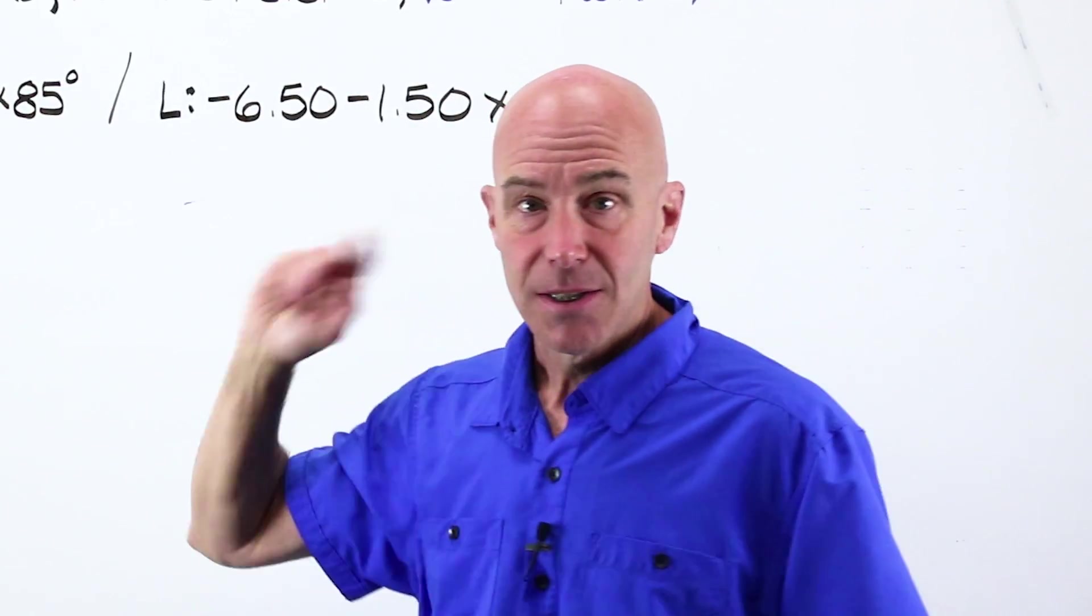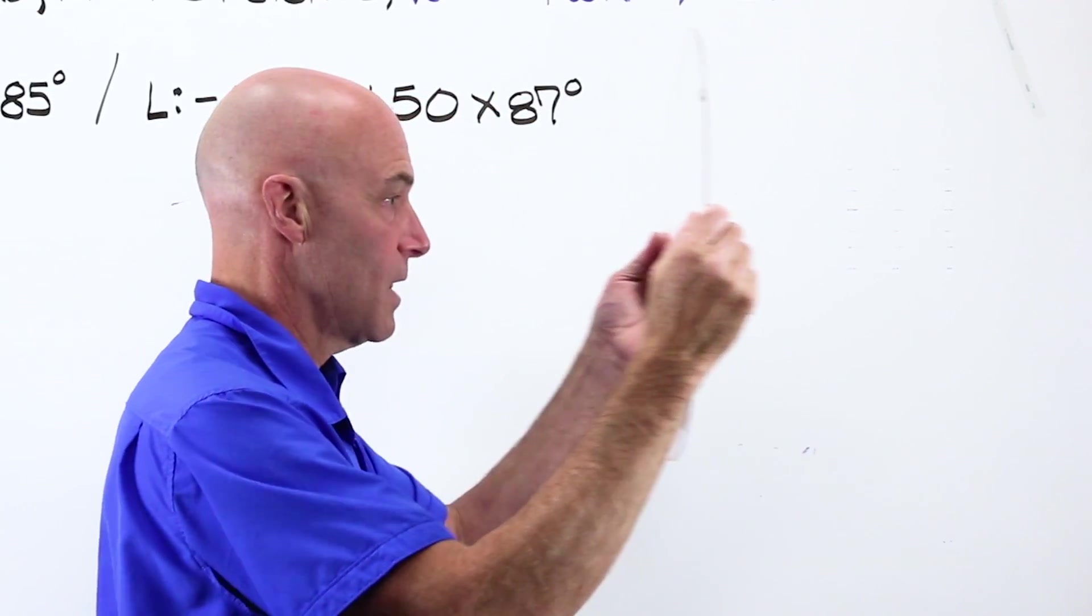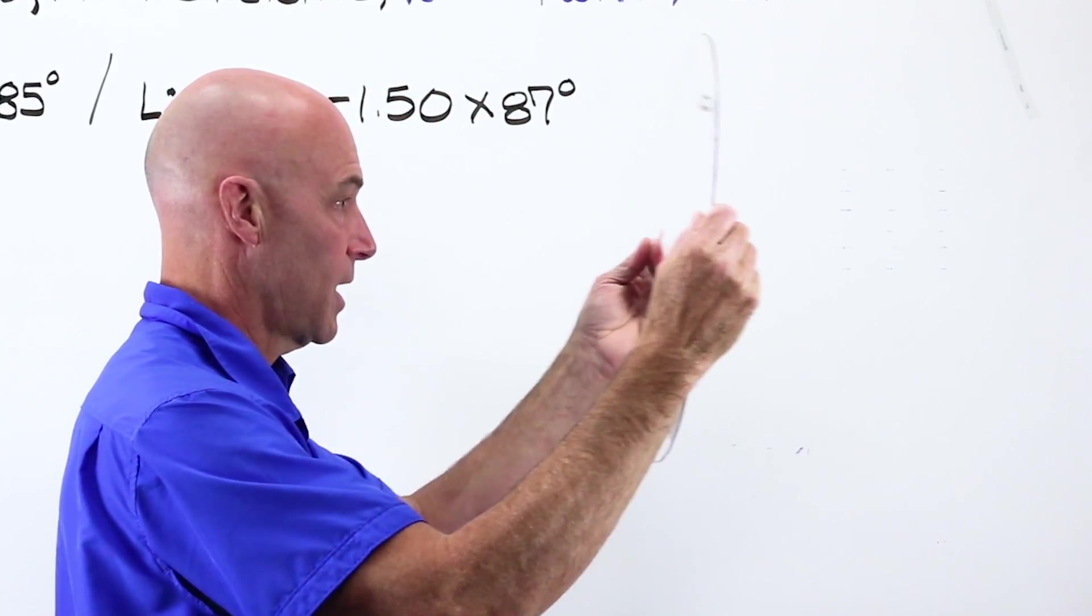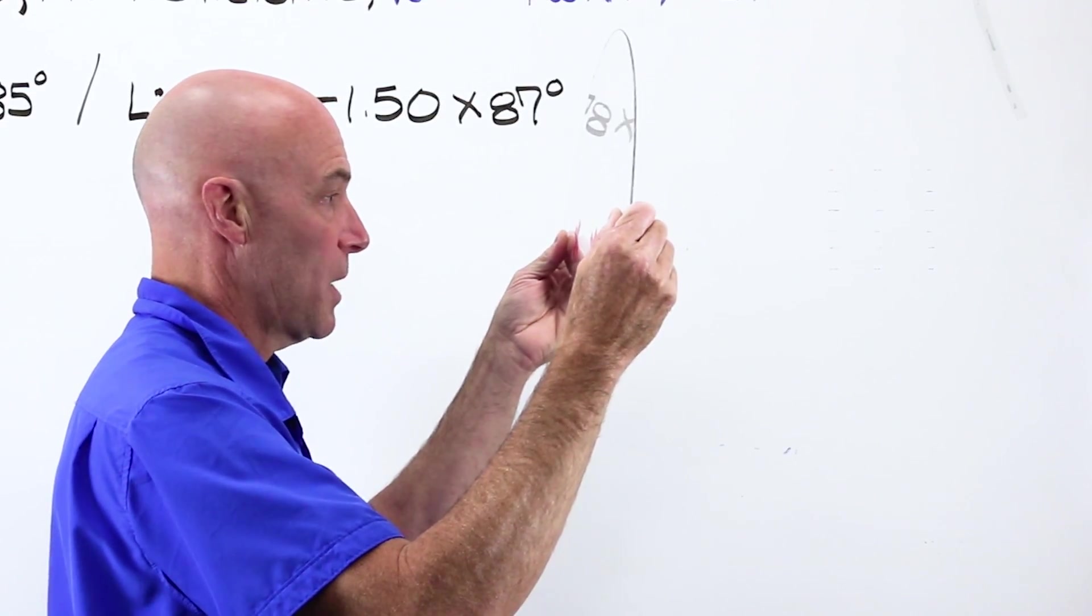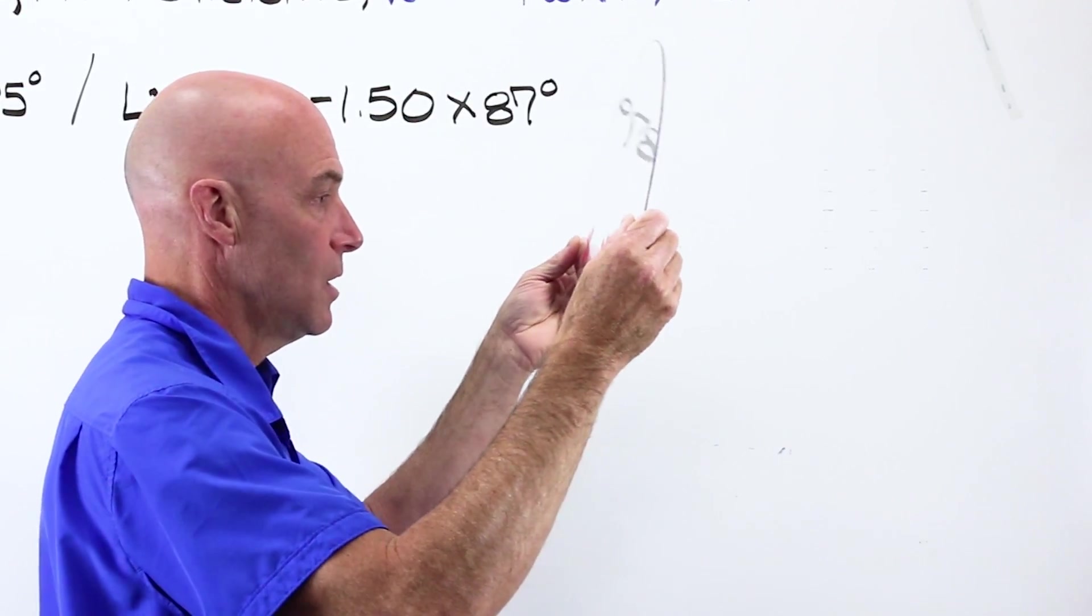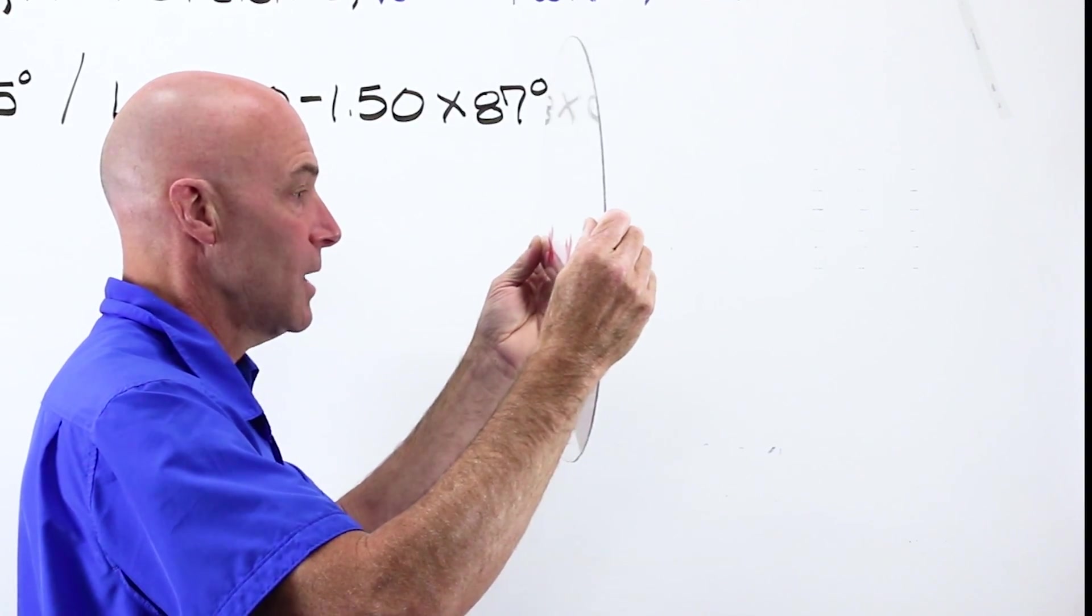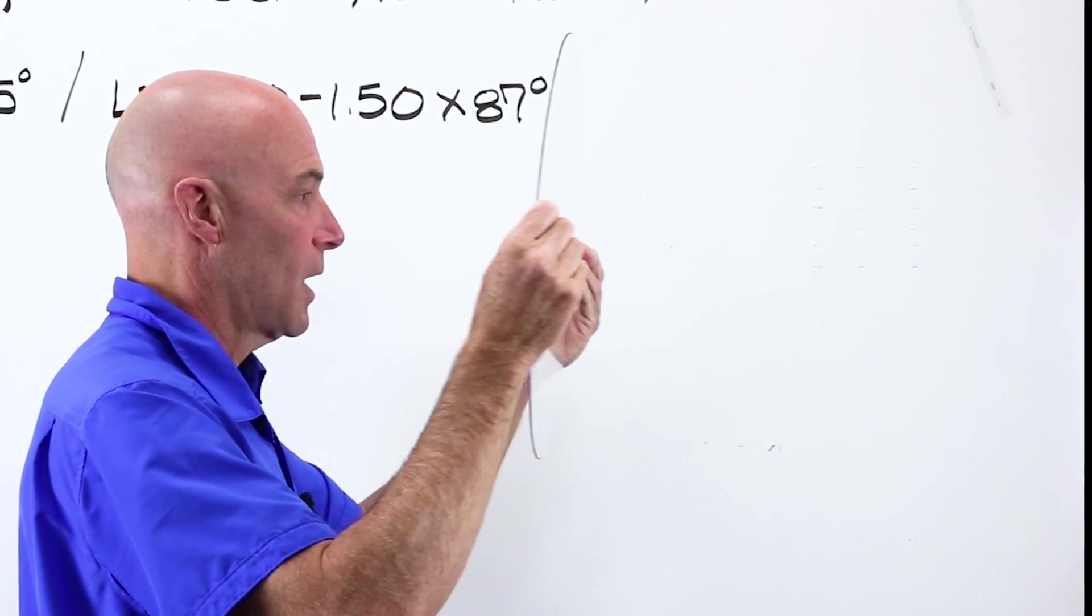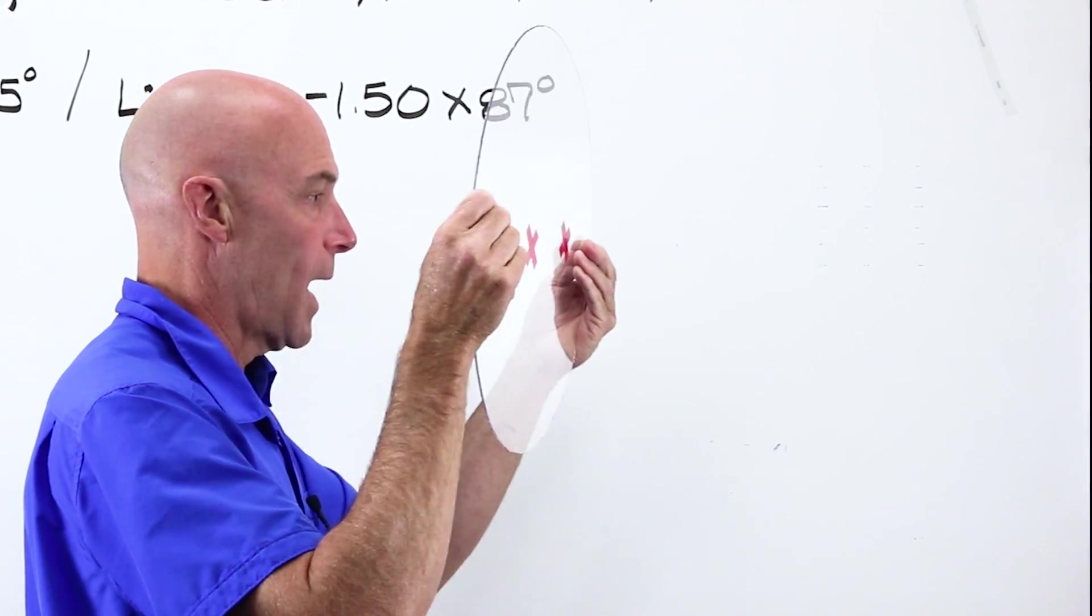How does it see it different? It sees it different depending on how far away from my eye the lens is, vertex distance. It sees it different depending on how the lens is tilted, retro, panto, neutral. And it sees it differently depending on how the lens is turned as far as face form or wrap.